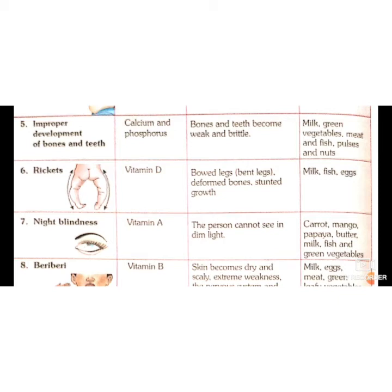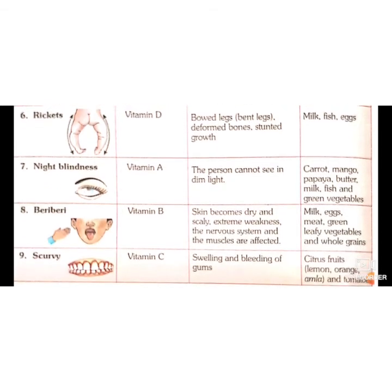Rickets is a disease caused due to deficiency of vitamin D. There are six types of vitamins: A, B, C, D, E, and K. Due to deficiency of vitamin D, rickets is caused, with symptoms including bent legs, deformed bones, and stunted growth. Give milk, fish, and eggs to address this deficiency.